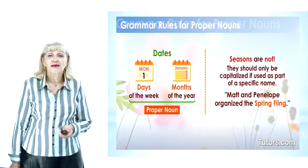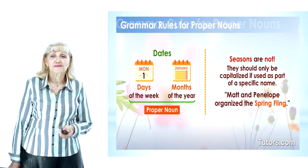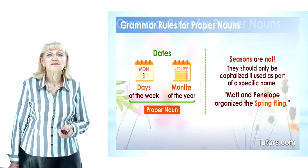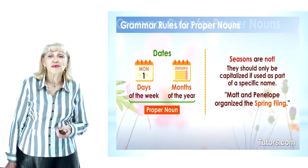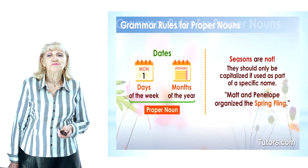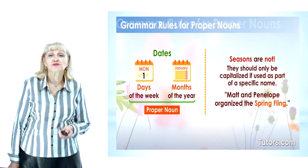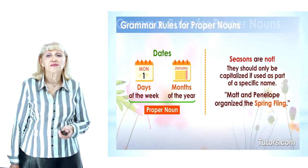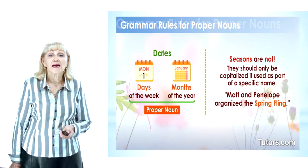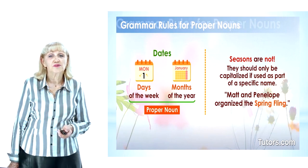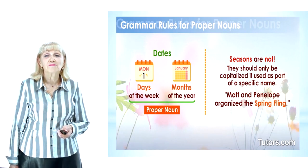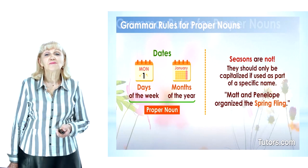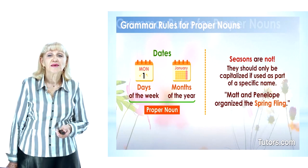Dates and calendar days: in English grammar, although the months and days of the week are proper nouns, like September and Thursday, the seasons are not and are thus not capitalized. For example: 'September is my favorite month because it marks the beginning of autumn.' Seasons should only be capitalized if used as part of a specific name: 'Warden and Penelope organized the Spring Fling.'